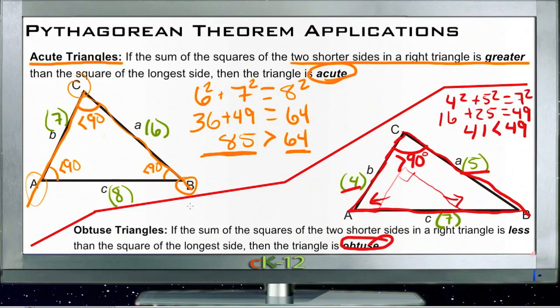So if your a plus b is greater than c, you get an acute triangle. And if your a plus b is less than c, you get an obtuse triangle.